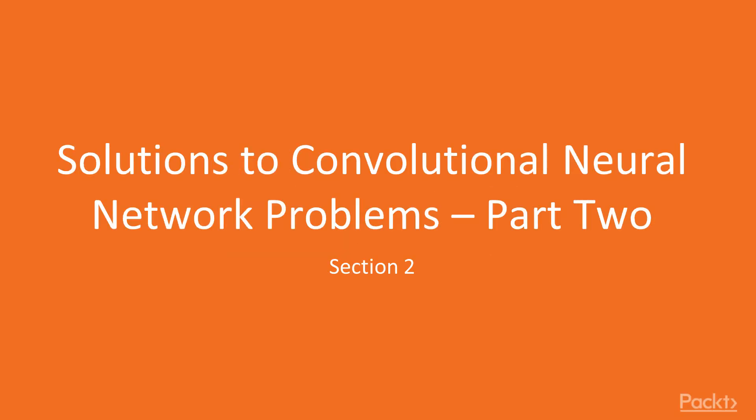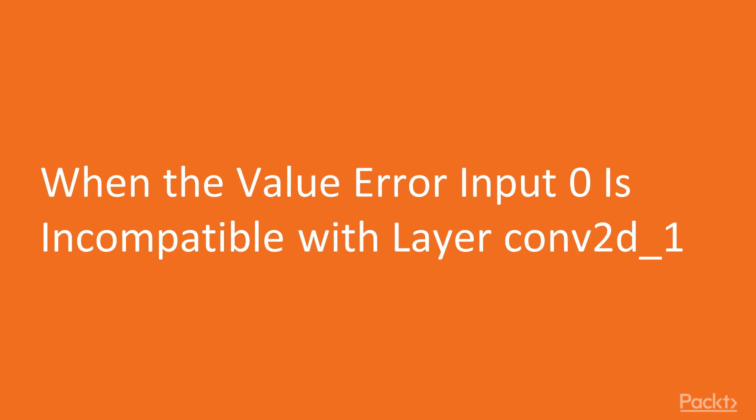Hello, and welcome to section two solutions to convolutional neural network problems. This is part two, and let's start by exploring the solution to the problem when we have an error in input, because the input is incompatible with the first convolutional layer.